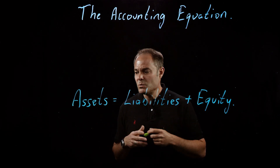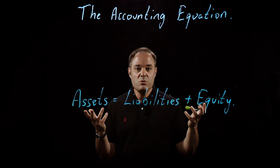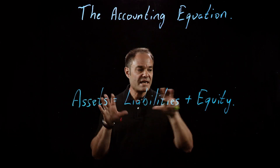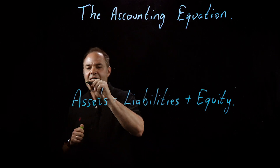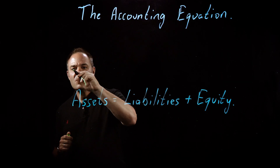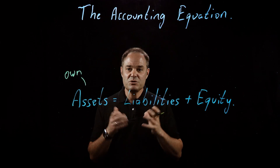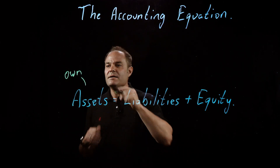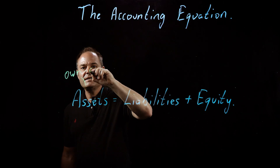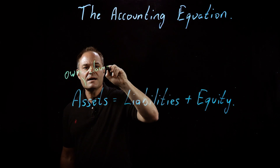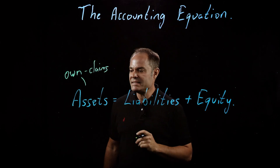What does that mean? In order to understand what the equation tells us and why it's so important, we have to understand what the three components are. First off, assets. Assets are something that a company owns — in the simplest way of putting it, we could say it's claims that a company has on something.